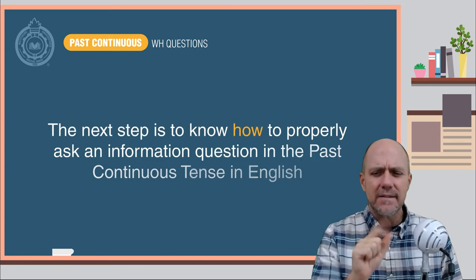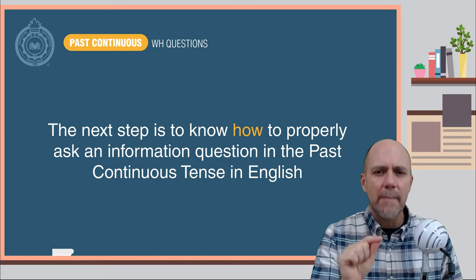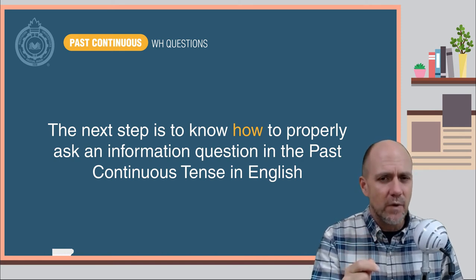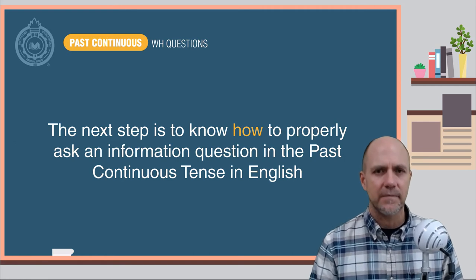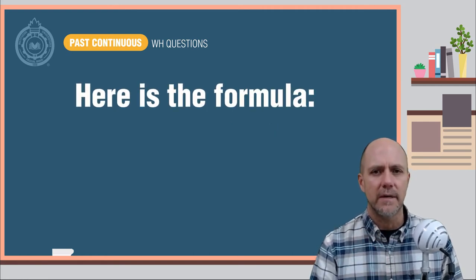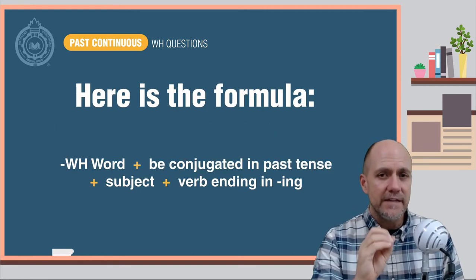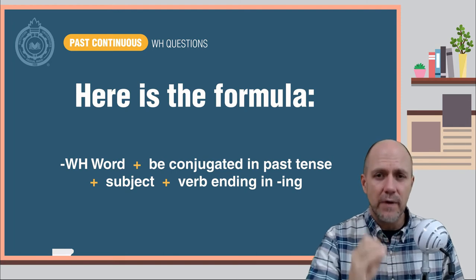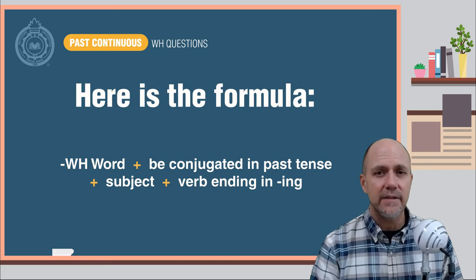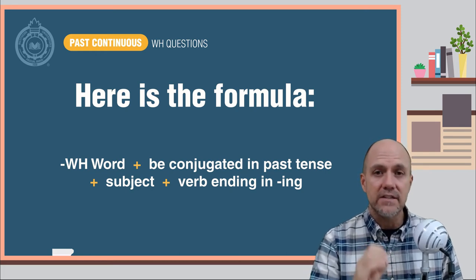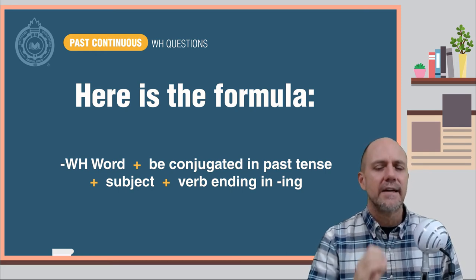The next step is to know how to properly ask an information question in the past continuous tense in English. Here is the formula. The information question, or the WH word, plus be conjugated in the past tense, plus the subject, plus the verb ending in ING.